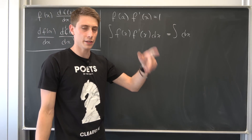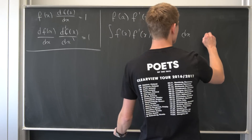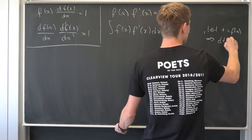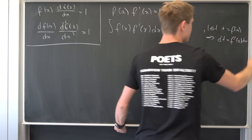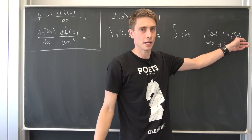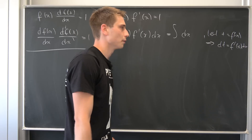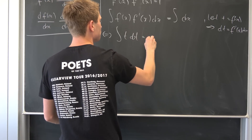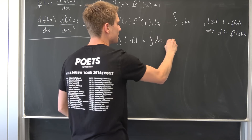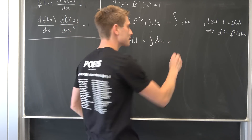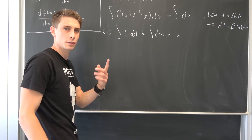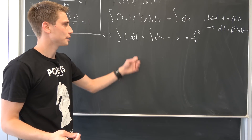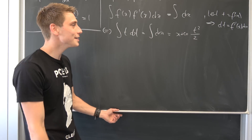To see a bit more clearly what this evaluates to, I introduce a substitution. Let t equal f(x). That means dt equals f'(x) dx. So we end up with the integral of t dt on the left, equal to x on the right. The left side evaluates to t² over 2. Since it's an indefinite integral, we add a constant c.